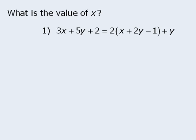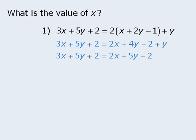Here we can simplify the equation by first expanding and simplifying the right-hand side. From here, we can subtract 2x from both sides of the equation, and then subtract 5y from both sides. Finally, when we subtract 2 from both sides, we can see that x must equal negative 4.